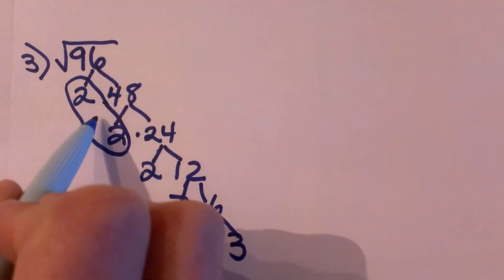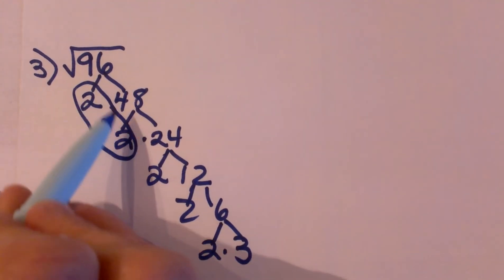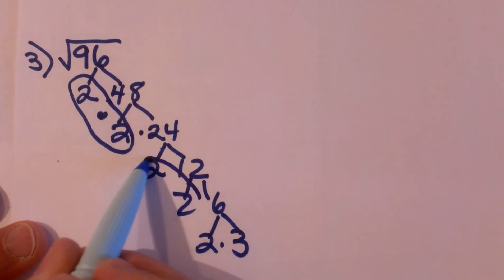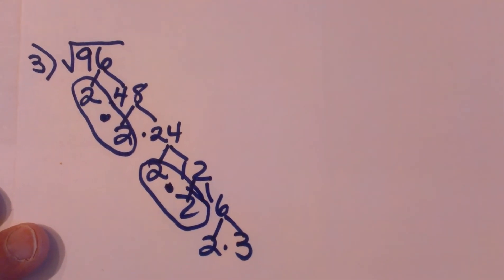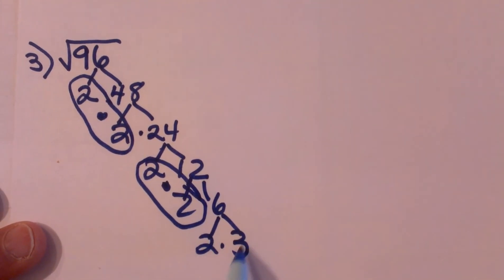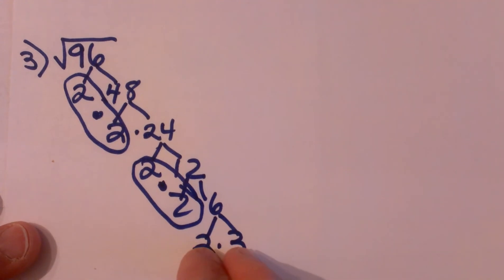Ok these two can pair up and come out of the radical. These two can pair up and come out of the radical. Then I have a 2 and a 3 left. They don't have a partner to pair up with so those two cannot come out of the radical.